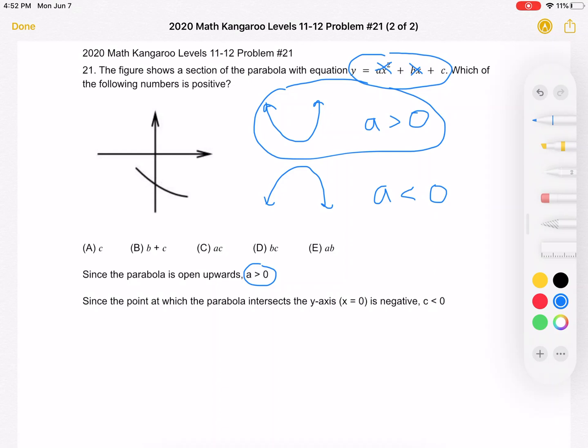When x is equal to 0, that's equivalent to the y-axis, and we can see that that point of intersection is right here. It's a negative number. So that means that c is less than 0.